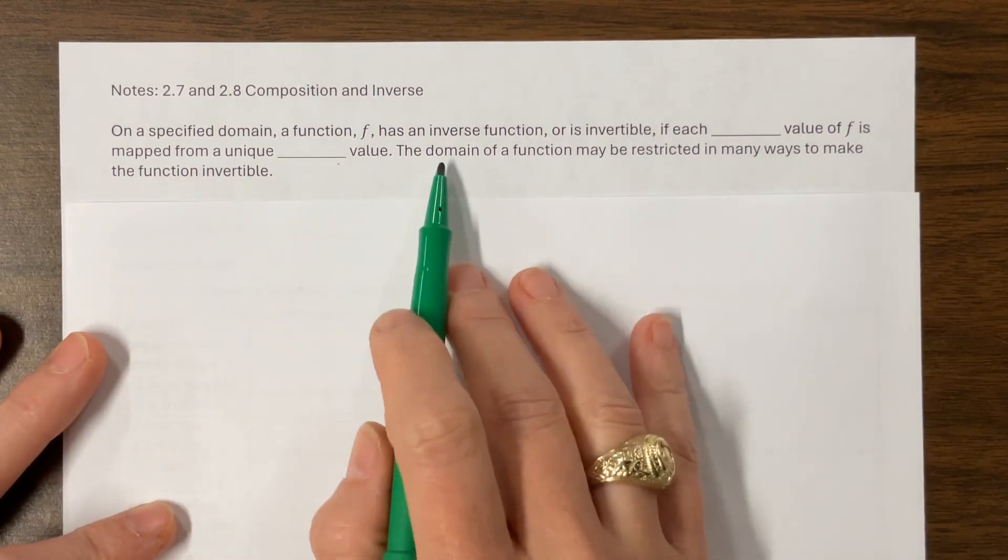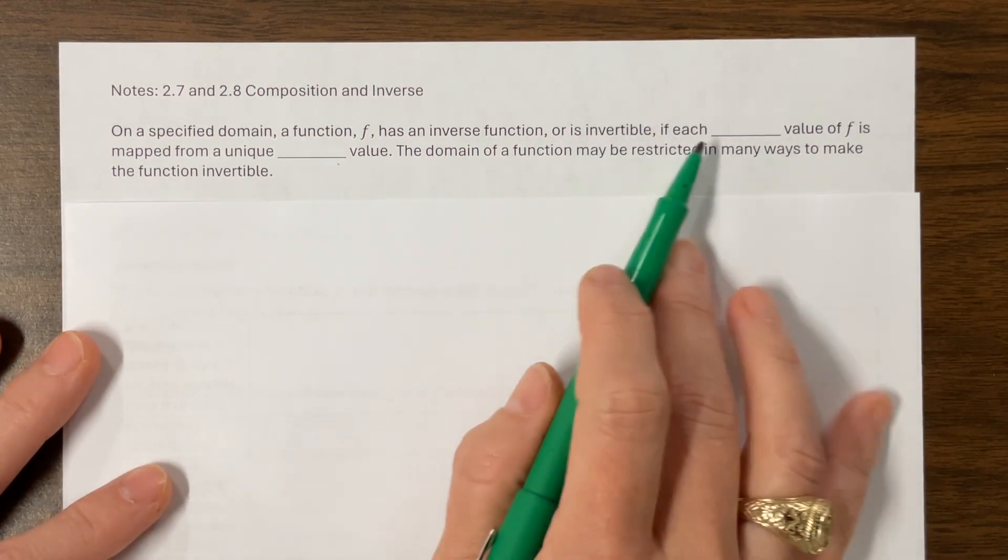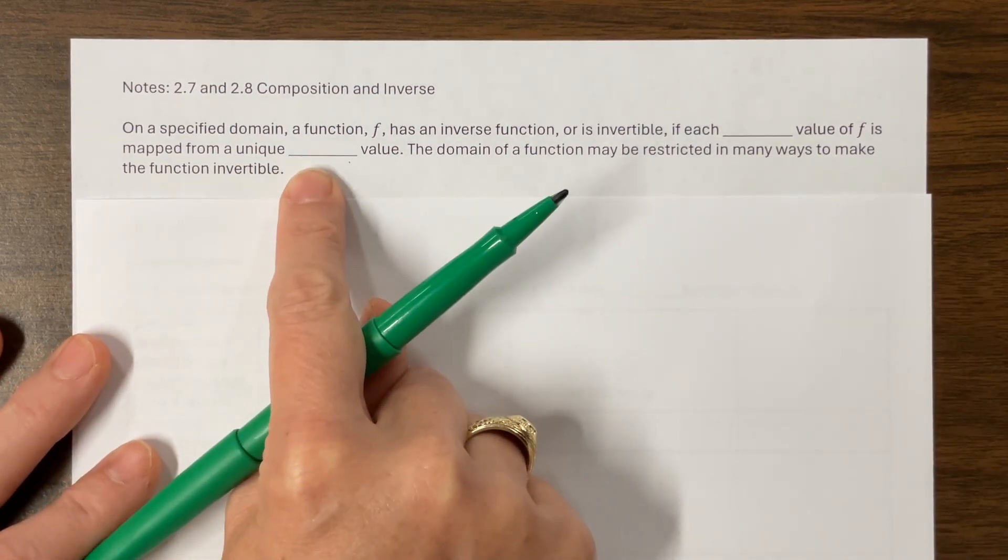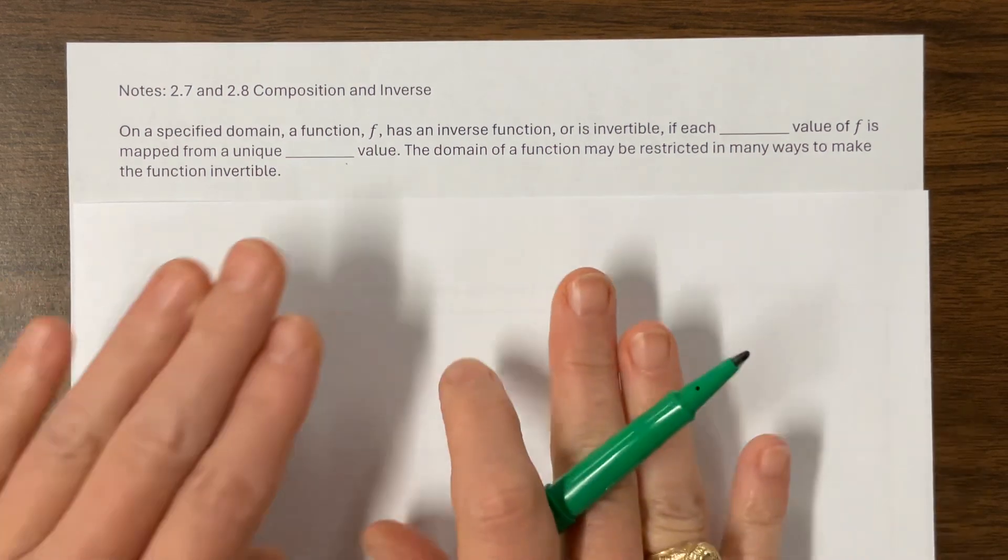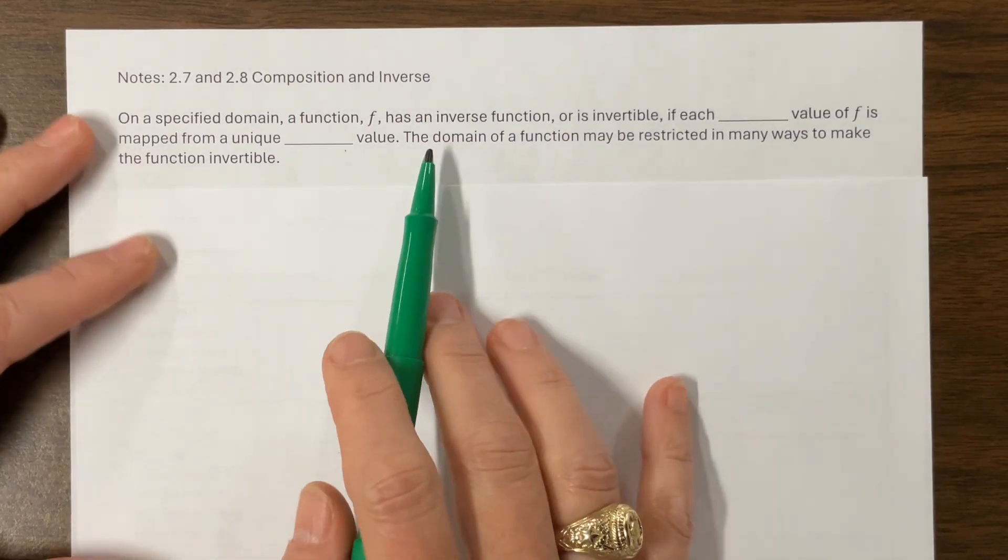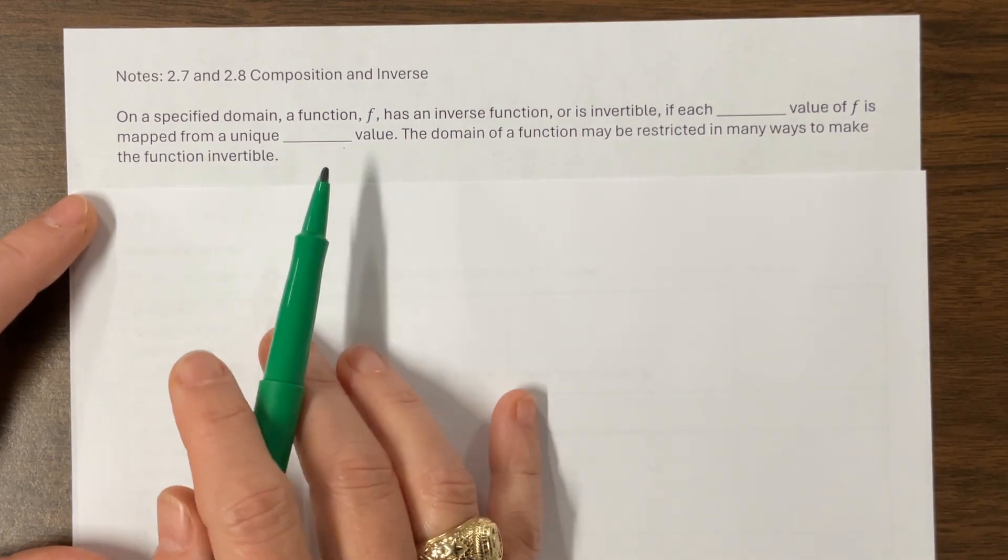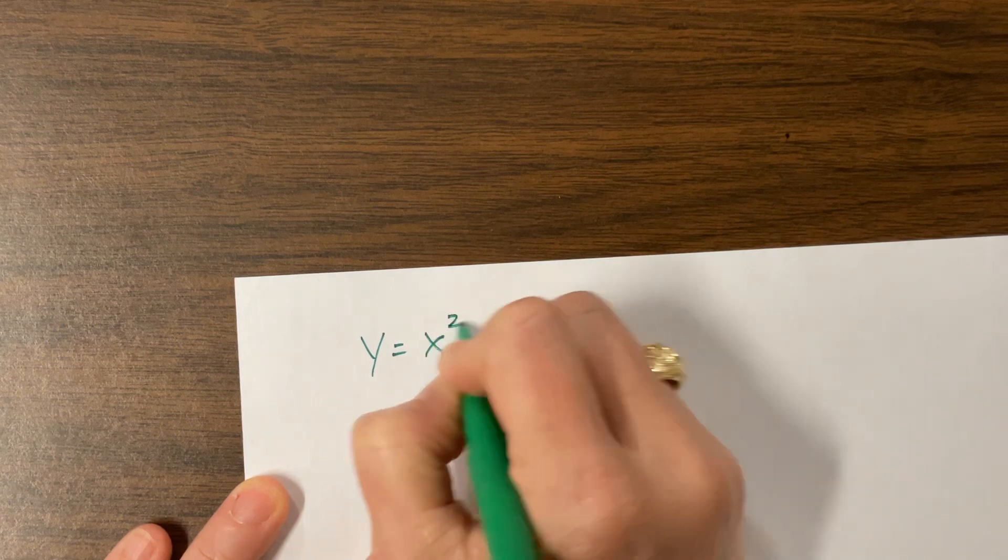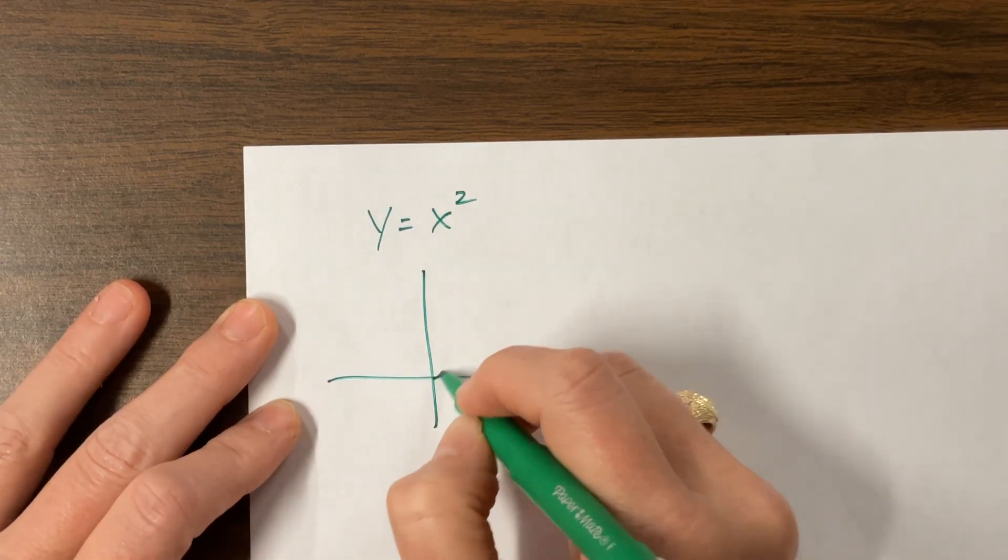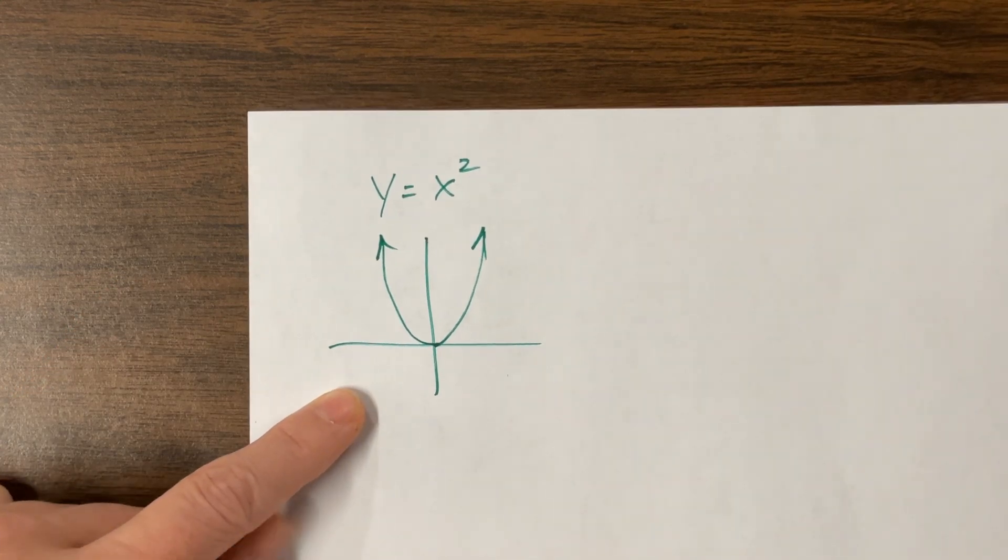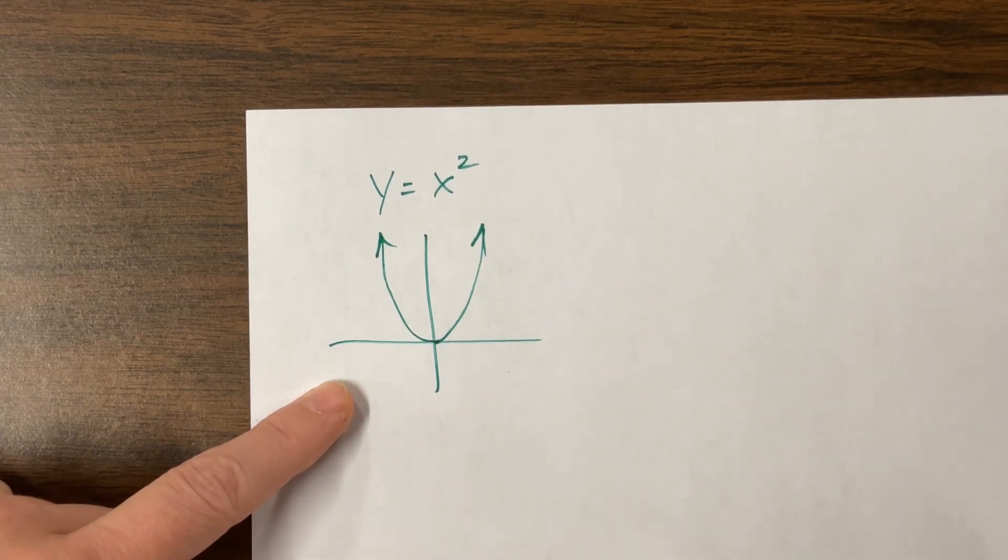On a specific domain, a function f has an inverse function, or is invertible, if each output value is mapped onto a unique input value. Because what we're about to do when we take the inverses, we're about to switch, and what was an output value becomes an input value, and what was an input value becomes an output value. The domain of a function may be restricted in many ways to make the function invertible. Sometimes they'll ask the question, is this invertible? Like if I say, is y equals x squared invertible?